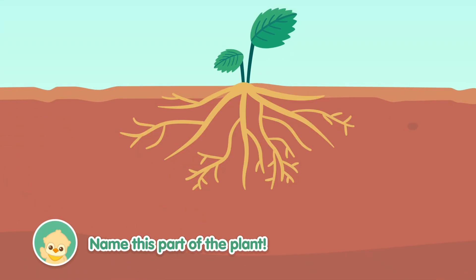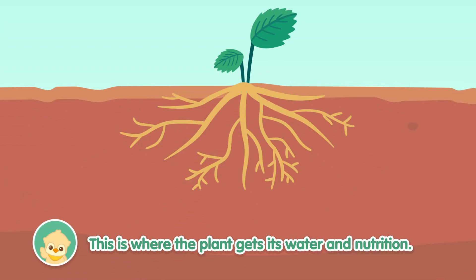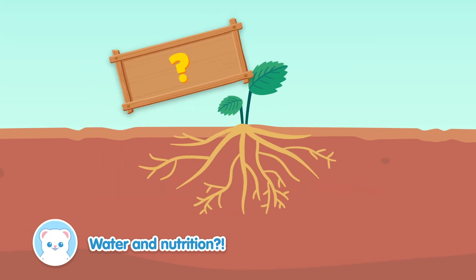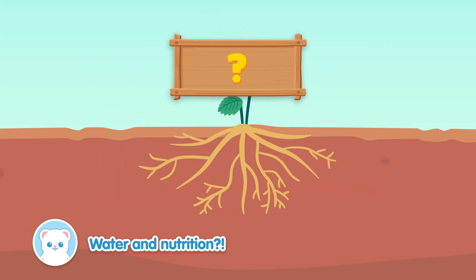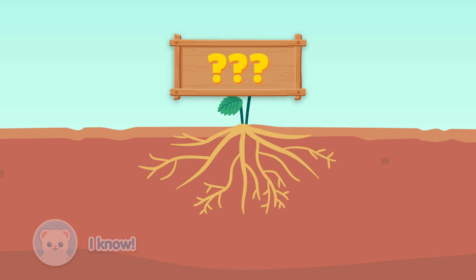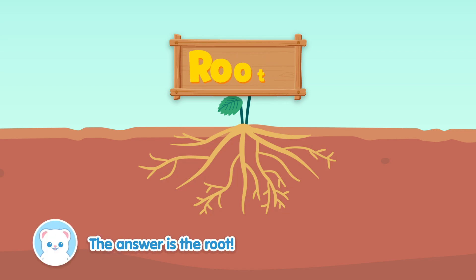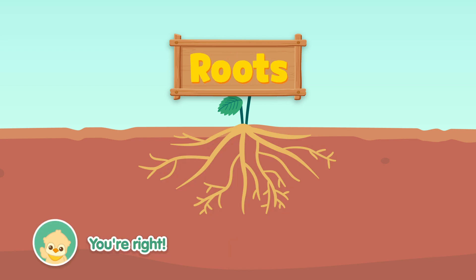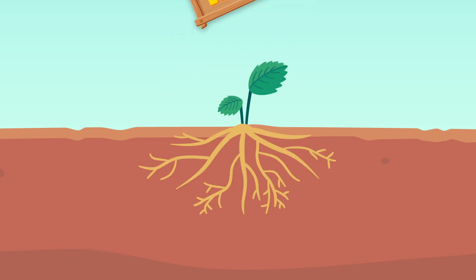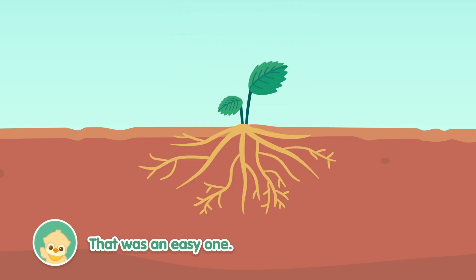Name this part of the plant. This is where the plant gets its water and nutrition. Also, this part gives structural support for the plant. Water and nutrition? I know! The answer is the root! You're right!